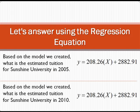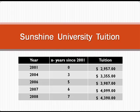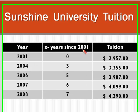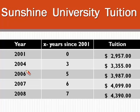So back to our question — we want to know the tuition in 2005 and 2010. You have to ask yourself: 2005 is how many years past our base year? Remember, our base year was 2001, so 2005 would be four years past 2001. 2010 would be nine years past 2001.